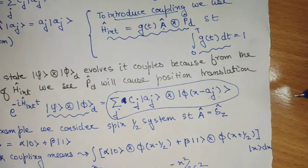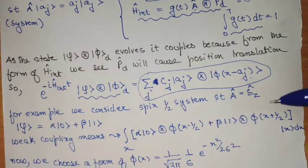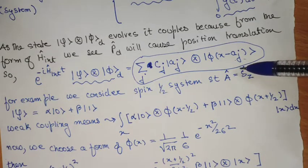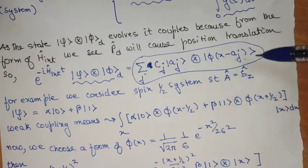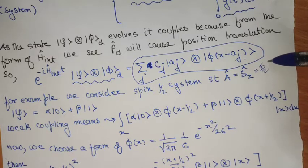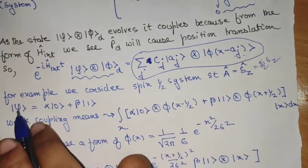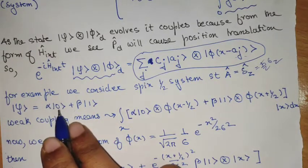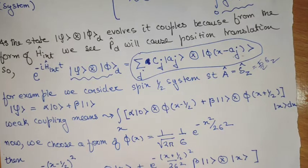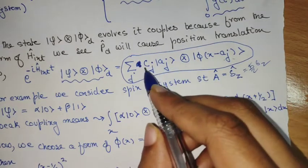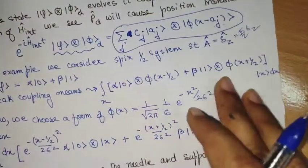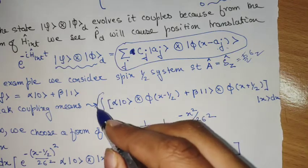Now we can take an example to see this kind of transition. Suppose we take an example of a spin-half system and try to measure the observable A, which we assume is the spin-z operator, the Pauli matrix sigma_z, so A = h-bar over 2 times sigma_z. If the initial state is a linear combination of |0⟩ and |1⟩, which are eigenstates of the spin-z operator, then the weak coupling will produce a state that, written in integral form using the Gaussian phi(x), will give a form as shown.